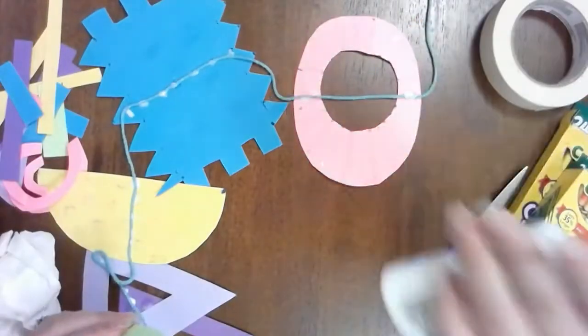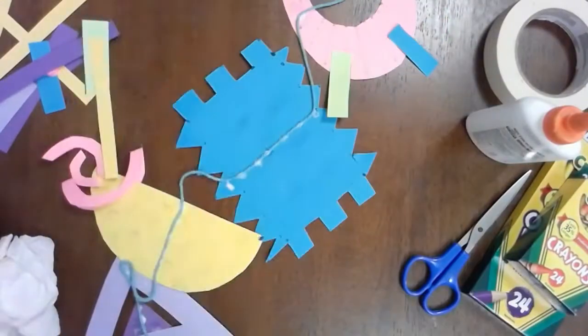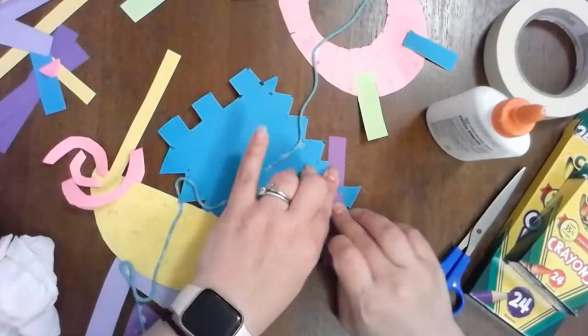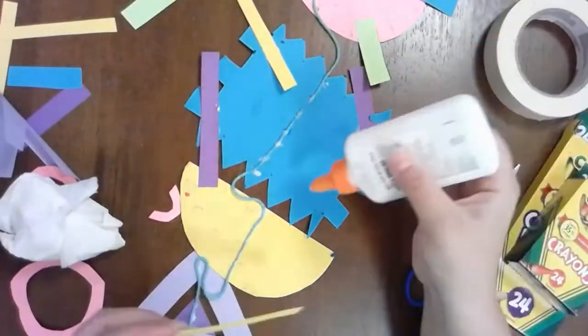Once you're done gluing on all your pieces, you can then also take some of the extra scraps and add them onto what you have already put on there.